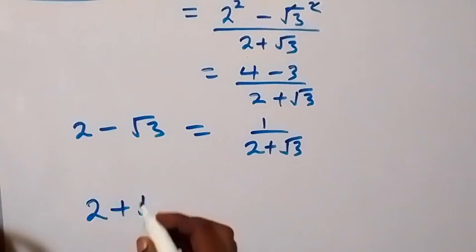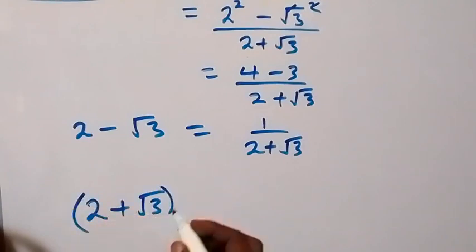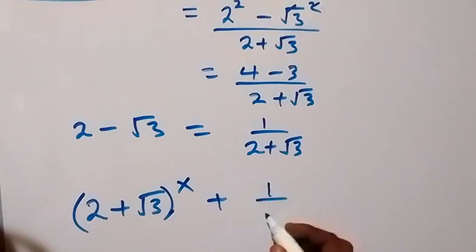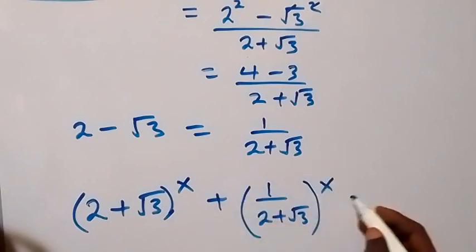That gives us (2 + √3) raised to power x, plus — where 2 minus √3 is now written as 1 over (2 + √3) — raised to power x, equals 4. This becomes (2 + √3)^x plus 1 over (2 + √3)^x equals 4.